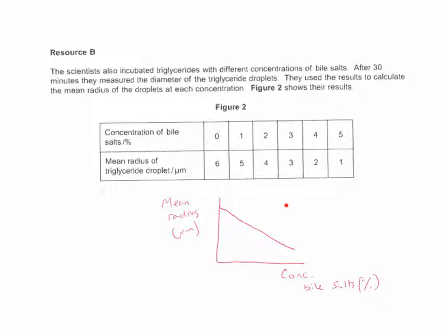I think the easiest way to describe data is to quickly put it into a sketch graph. So if you have the concentration of bile salts on the bottom and the mean radius of the triglyceride droplets up the side, you could see that you've got a linear relationship, you've got negative correlation. So as the bile concentration increases, the radius of the triglyceride droplets decrease.